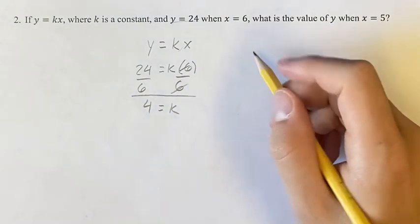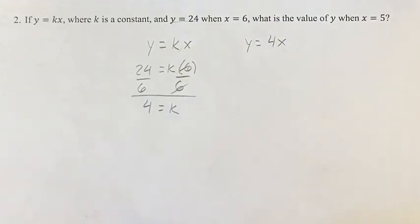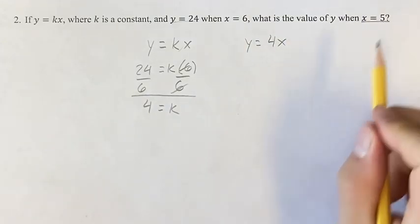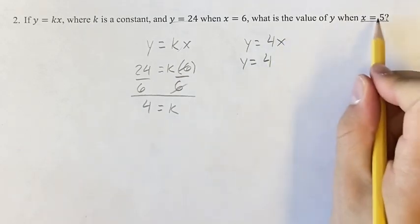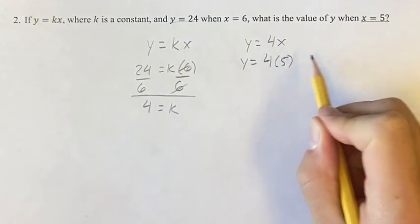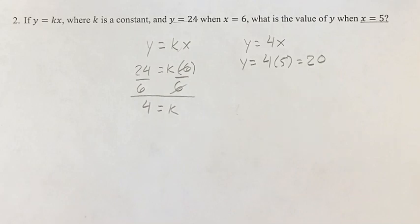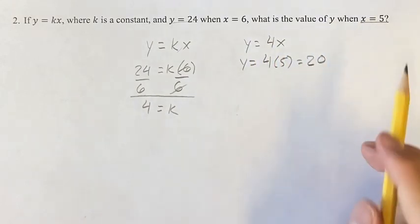So we know that k is equal to 4, so the equation is actually y is equal to 4x. And now, we're looking for when x is equal to 5, therefore y is equal to 4 times x is 4 times 5. 4 times 5 is 20. So what is the value of y when x is equal to 5?